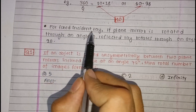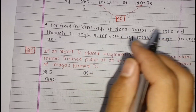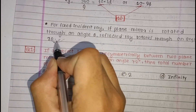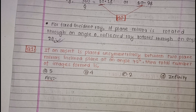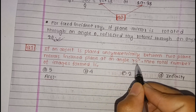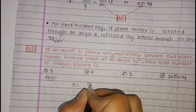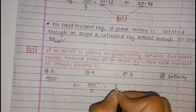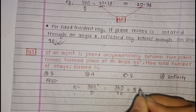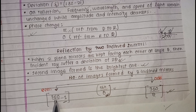For a fixed incident ray, if a plane mirror is rotated about an angle theta, the reflected ray is rotated about an angle 2 theta. If an object is placed unsymmetrically between two plane mirrors inclined at an angle of 72 degrees, the number of images is 360 divided by theta, which equals 360 divided by 72, equal to 5.